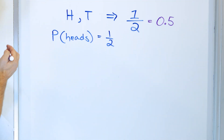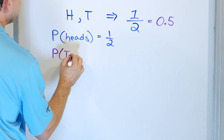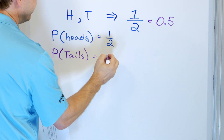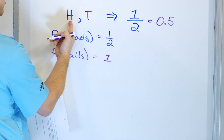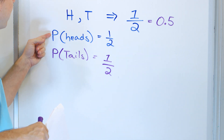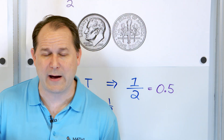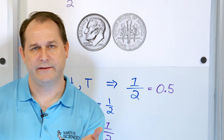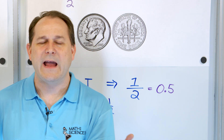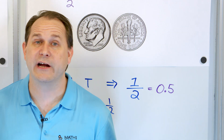Instead of calculating the probability of heads, let's figure out what is the probability of tails. How many ways can I get tails? There's only one. And there are two possible outcomes. So the probability of getting tails is one half. The probability of heads is one half and the probability of tails is one half — they're equal, because there are only two sides to a balanced coin.